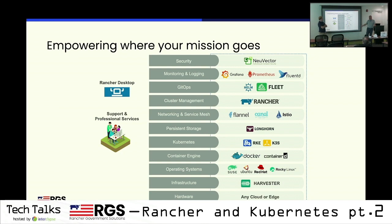Moving on to our first product from Rancher, upstream from SUSE, is a tool called Harvester — that's just hyper-converged infrastructure. You can run virtual machines and containers on the same host operating system on bare metal. It's very popular at the edge, and we have a customer here evaluating it as a replacement. Going from VMs to containers, having them coalesce on the same hardware really helps.